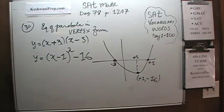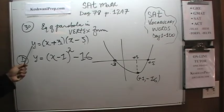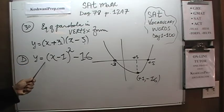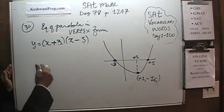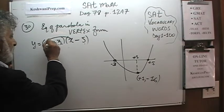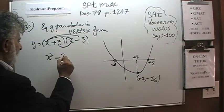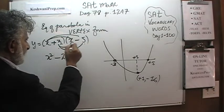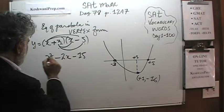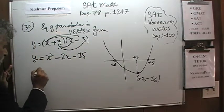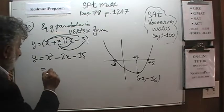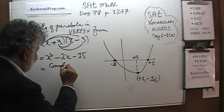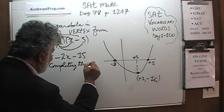That is answer choice D. But let's verify how we make the transition from intercept form to vertex form by completing the square. Expanding (x plus 3)(x minus 5): x squared minus 5x plus 3x minus 15 gives x squared minus 2x minus 15. Now we complete the square.